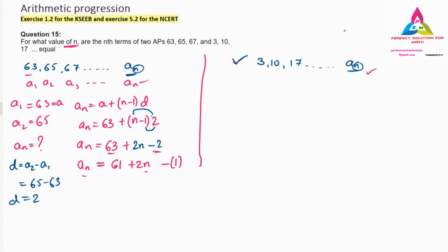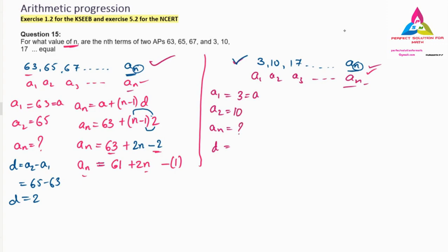Now for the second AP: a1 = 3, a2 = 10, a3 and so on. Remember not to mix the two APs — a1 is different for each, but the nth term value is equal for both. The d value is a2 − a1 = 10 − 3 = 7.